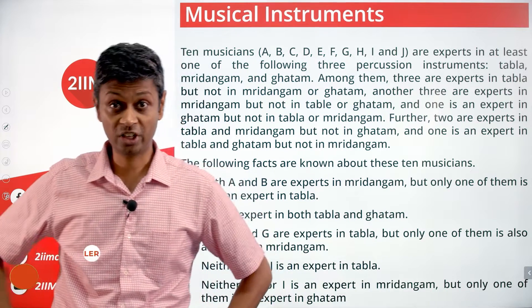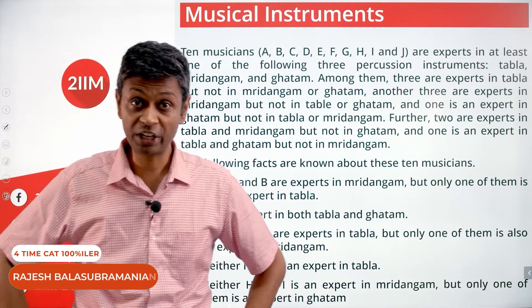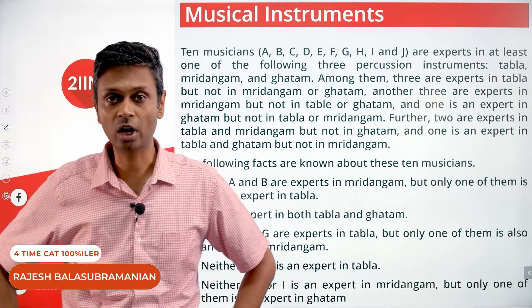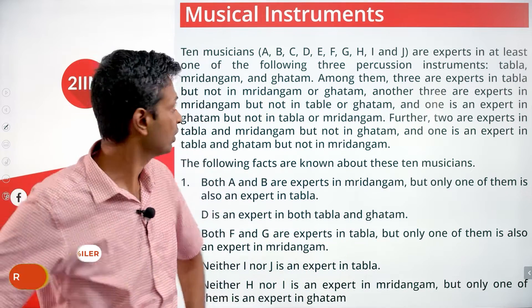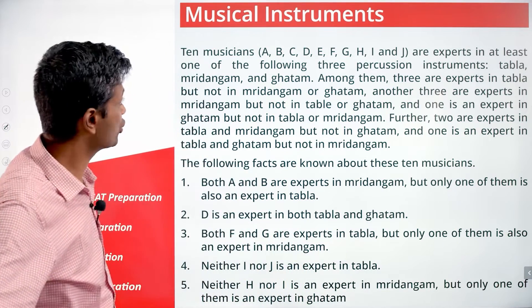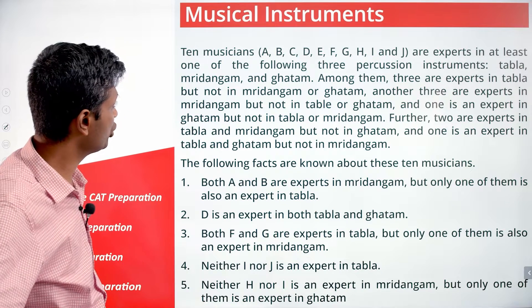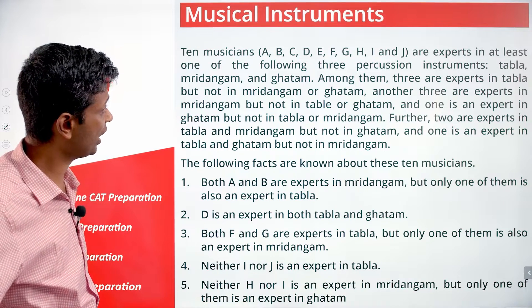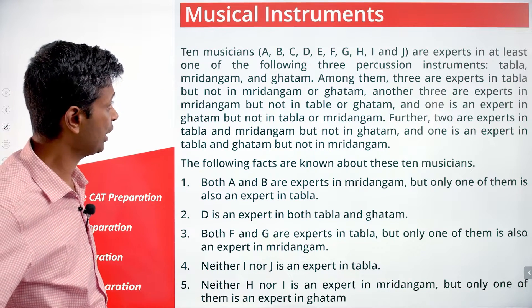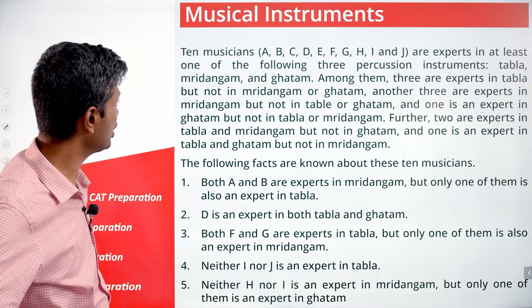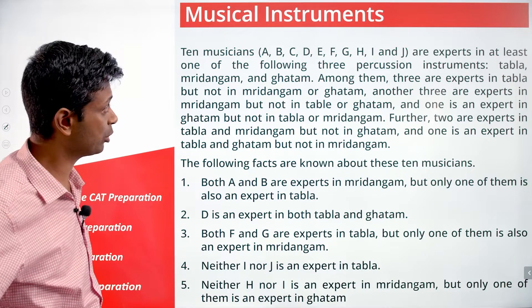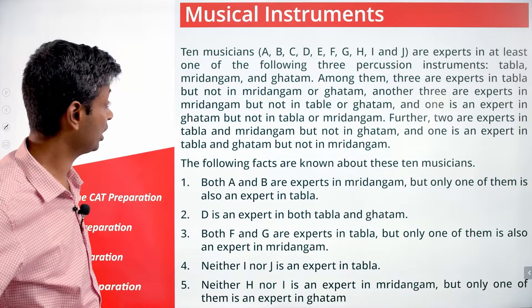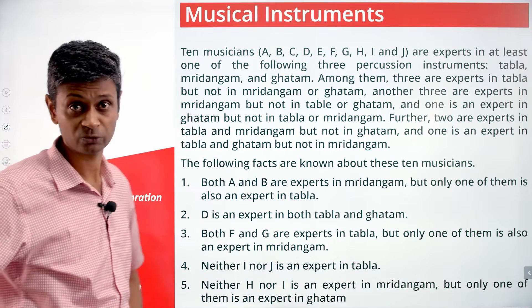Let's go to the next set — it's a very interesting one. Musical instruments: 10 musicians A, B, C, D, E, F, G, H, I, and J are experts in at least one of the following three percussion instruments: Tabla, Mridhangam, and Ghatam.